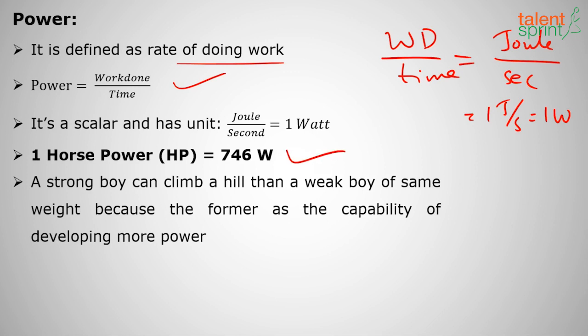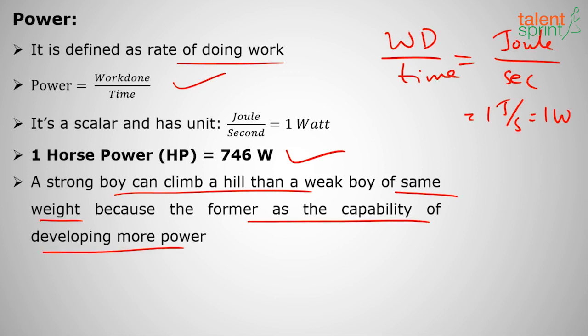One joule per second equals one watt. For motors and generators we use horsepower: one horsepower equals 746 watts. For example, a strong boy can climb a hill faster than a weak boy — even if they have the same weight — because the stronger boy can develop more power, climbing in less time.